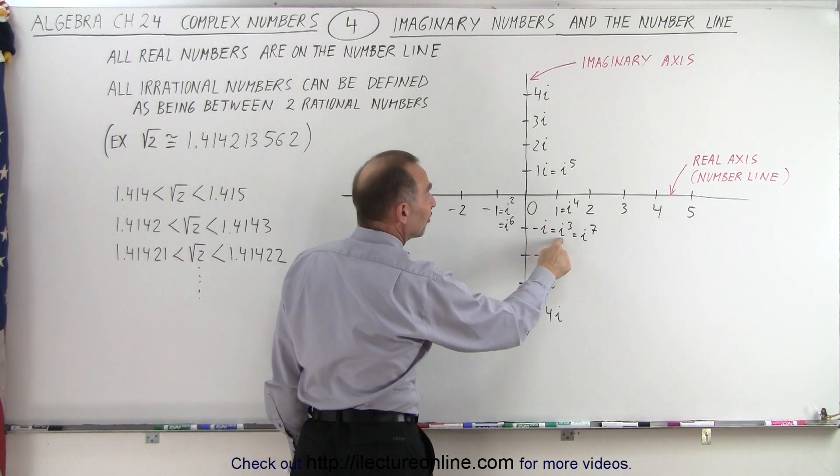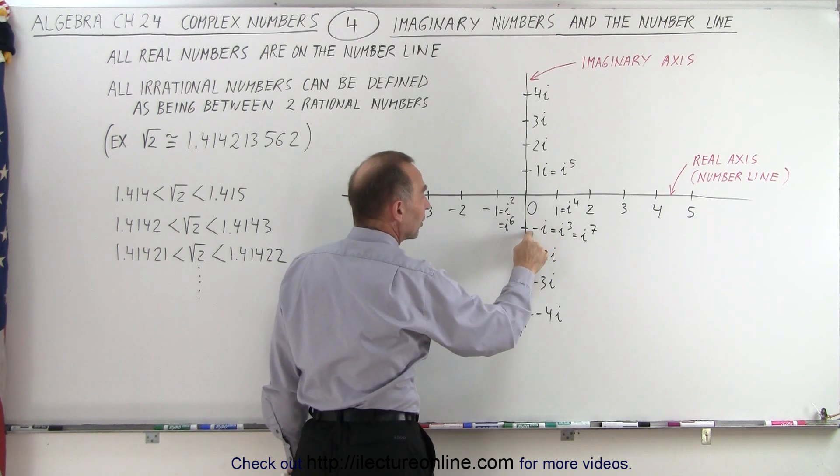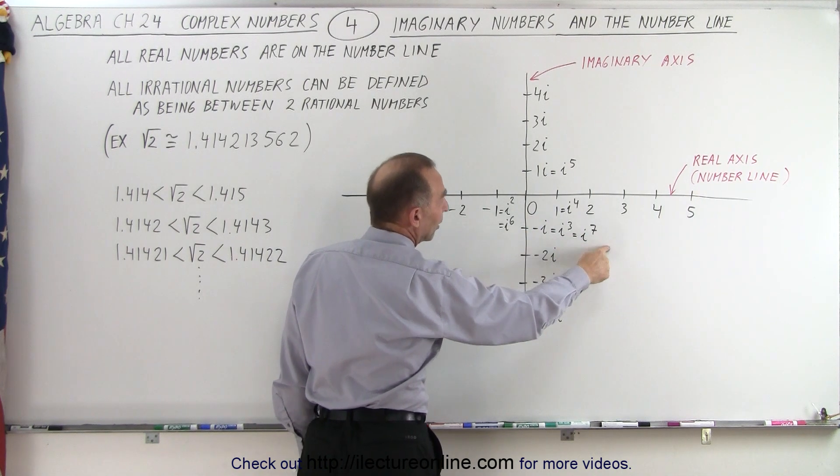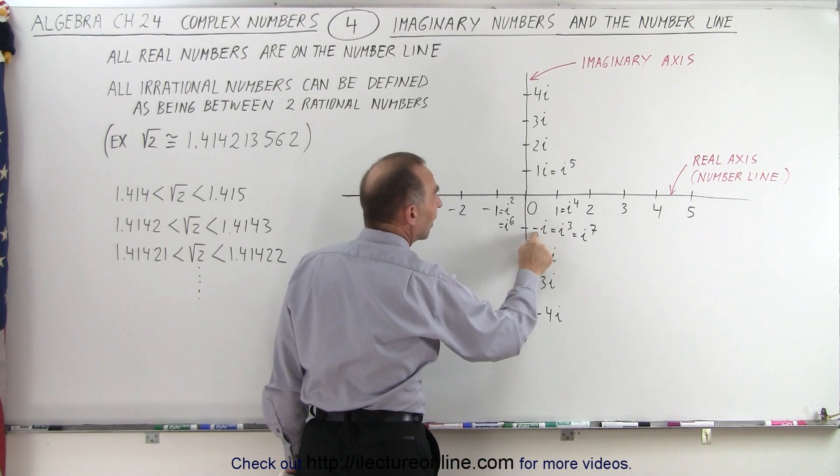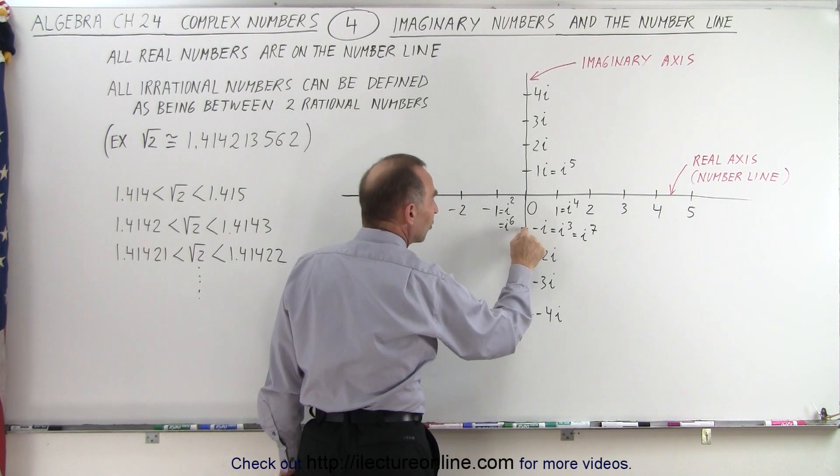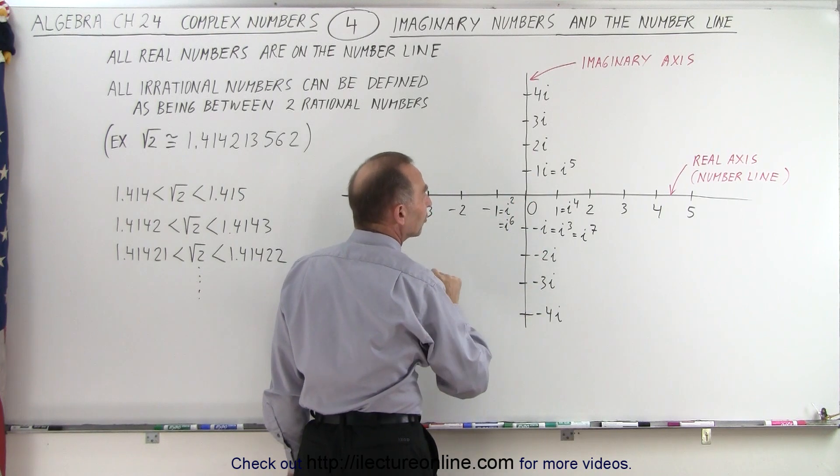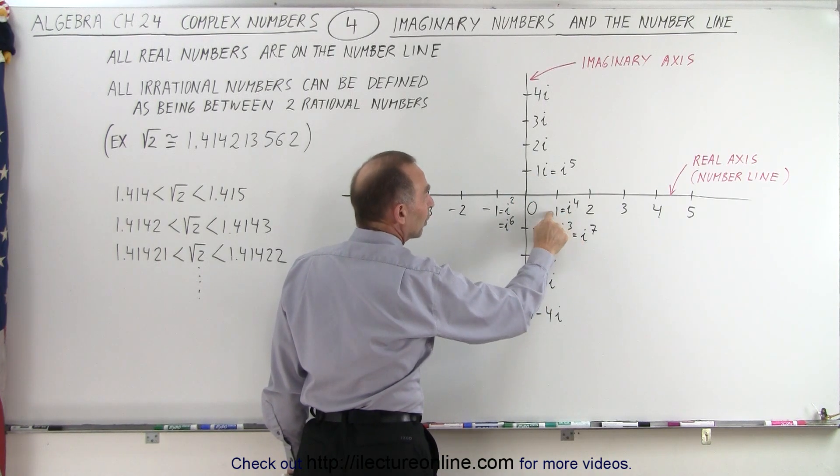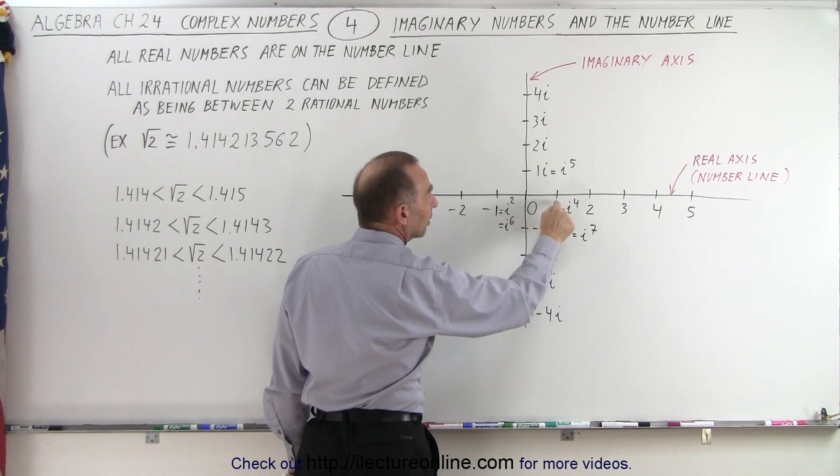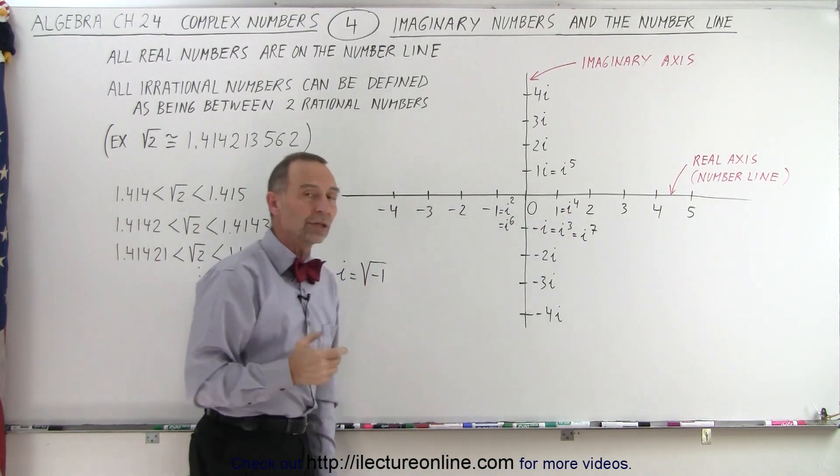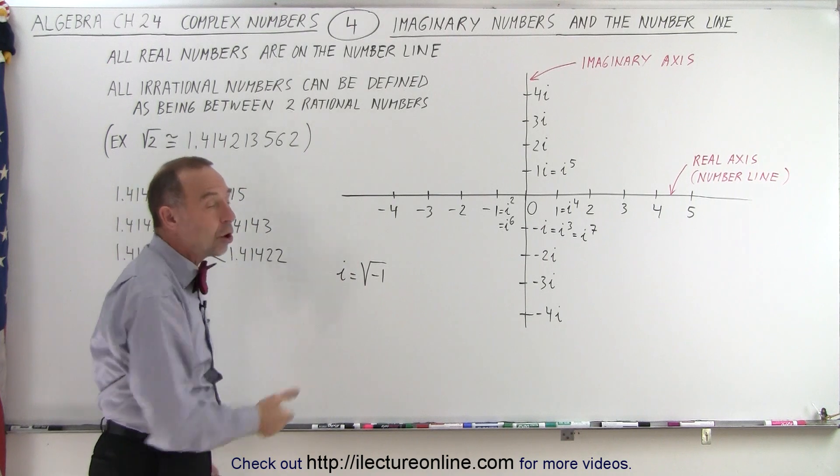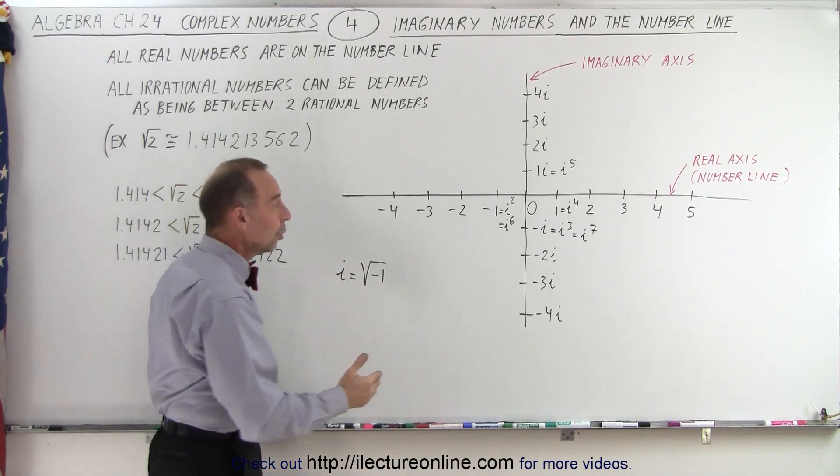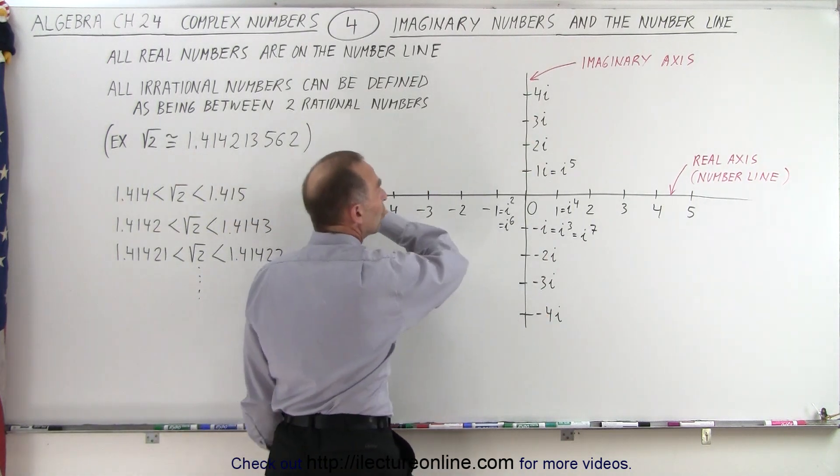i cubed is the same as negative i, so that's over here. The same as i to the seventh, i to the eleventh, i to the fifteenth. All those are equal to negative i, and so therefore they belong at this location on the imaginary axis. i to the fourth is a real number because i to the fourth is equal to 1. That places you back on the real number line. So at least you can see that we have another number line called the imaginary number line, which is perpendicular to the real number line.